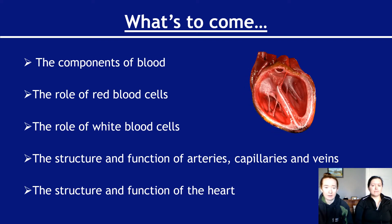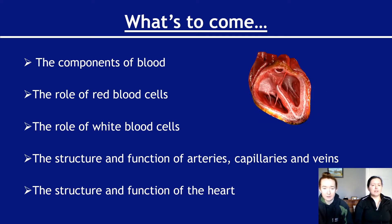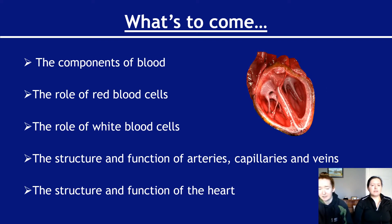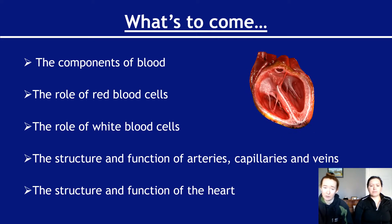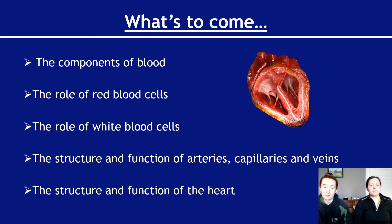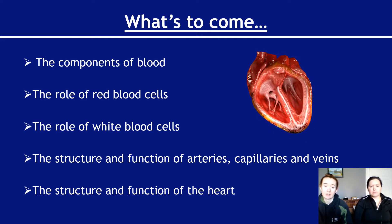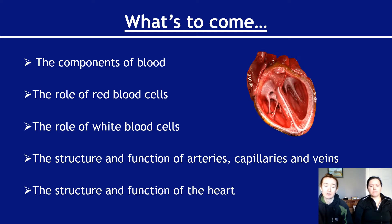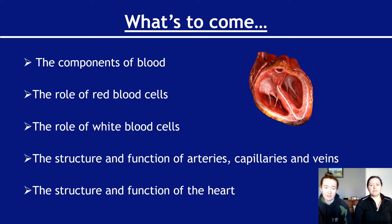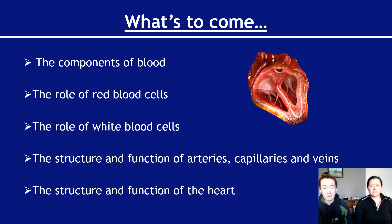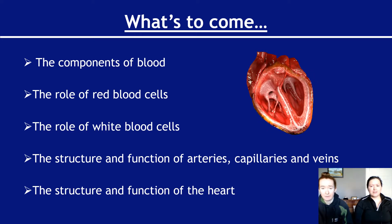So we're going to be looking at the components of blood. We're going to look at the different roles of red blood cells, the different roles of white blood cells and knowing the different types of white blood cells. In the next video we're going to be looking at the structure and the functions of different blood vessels - arteries, capillaries and veins. And in the final video, we're going to be looking at the structure and the function of the heart.